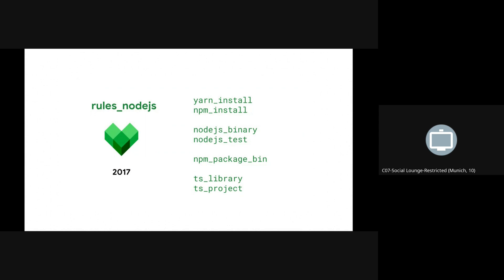The Bazel support for JavaScript came out originally in 2017 when Google open sourced Rules.js. There was a number of repository rules — Yarn and NPM were supported, rules for running and testing binaries, a rule for running JavaScript tools, type-produced outputs, and some rules for compiling TypeScript to JavaScript. Shortly after it was released, when my journey started with Bazel, I joined the Angular team. That's where I met my co-founder Alex, and I started to maintain Rules Node.js.